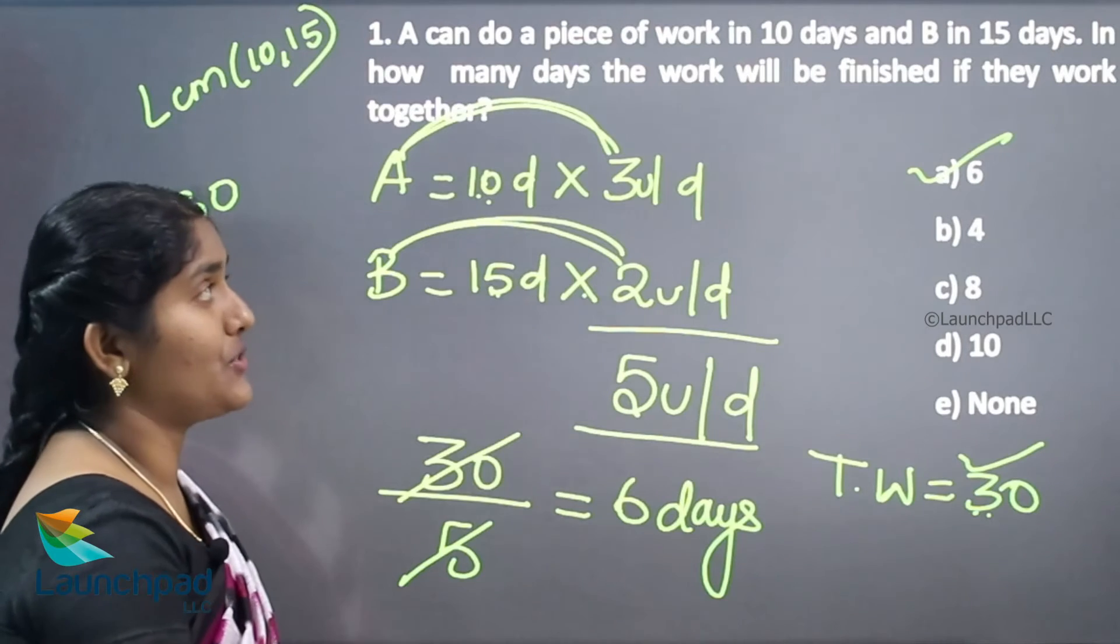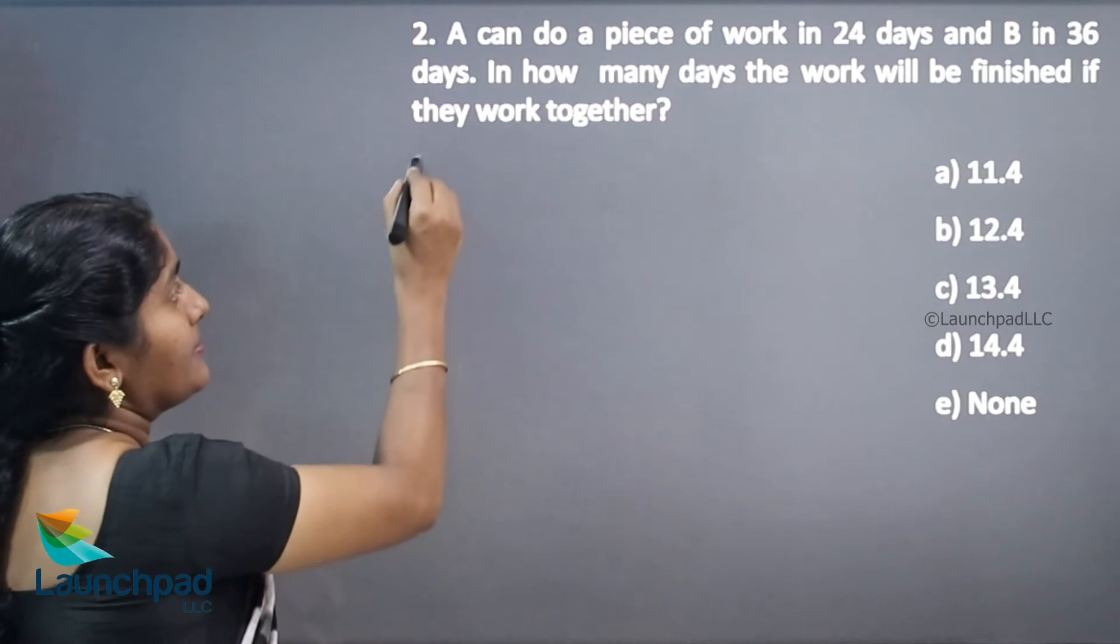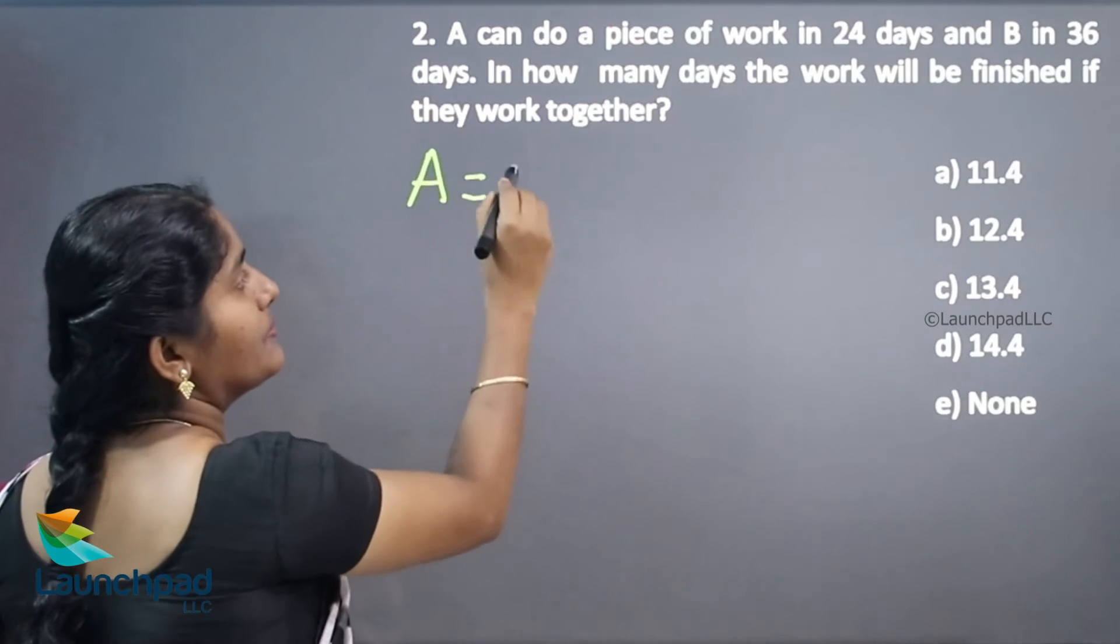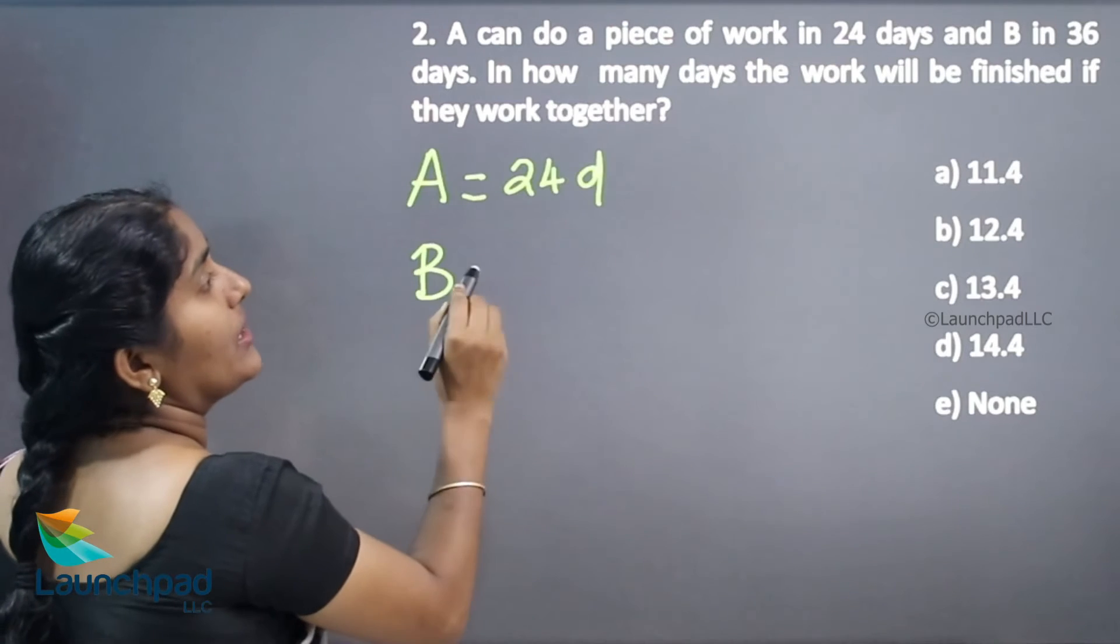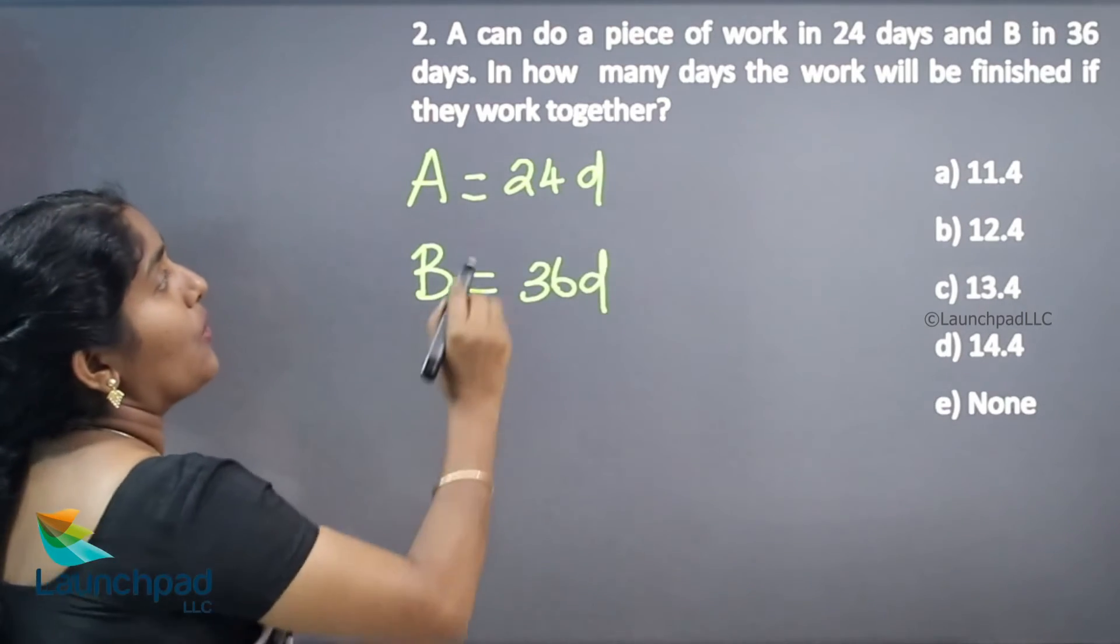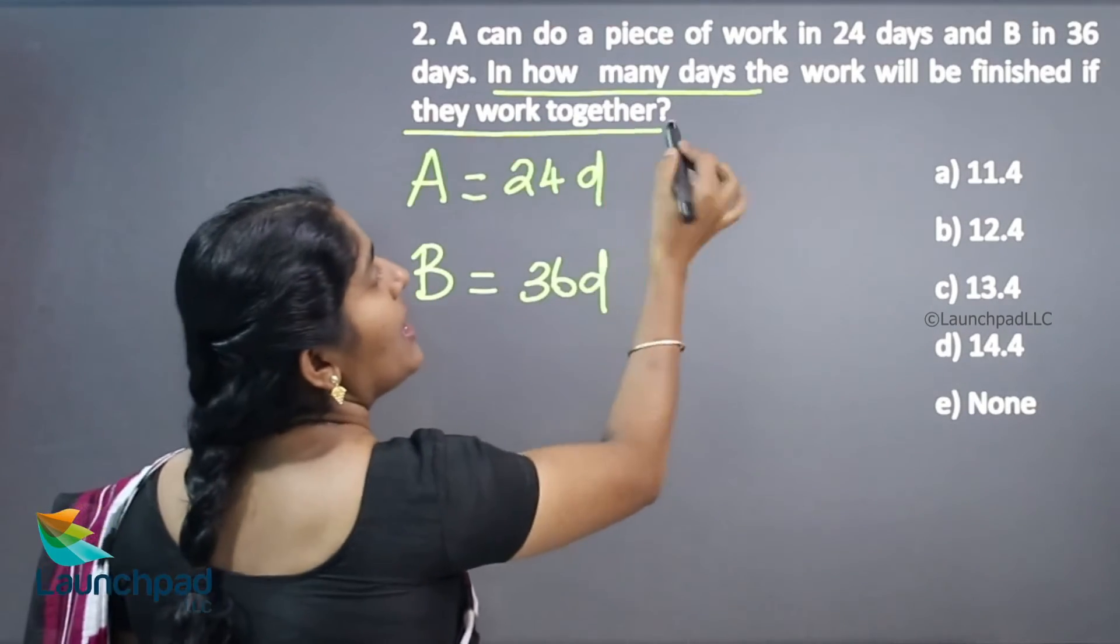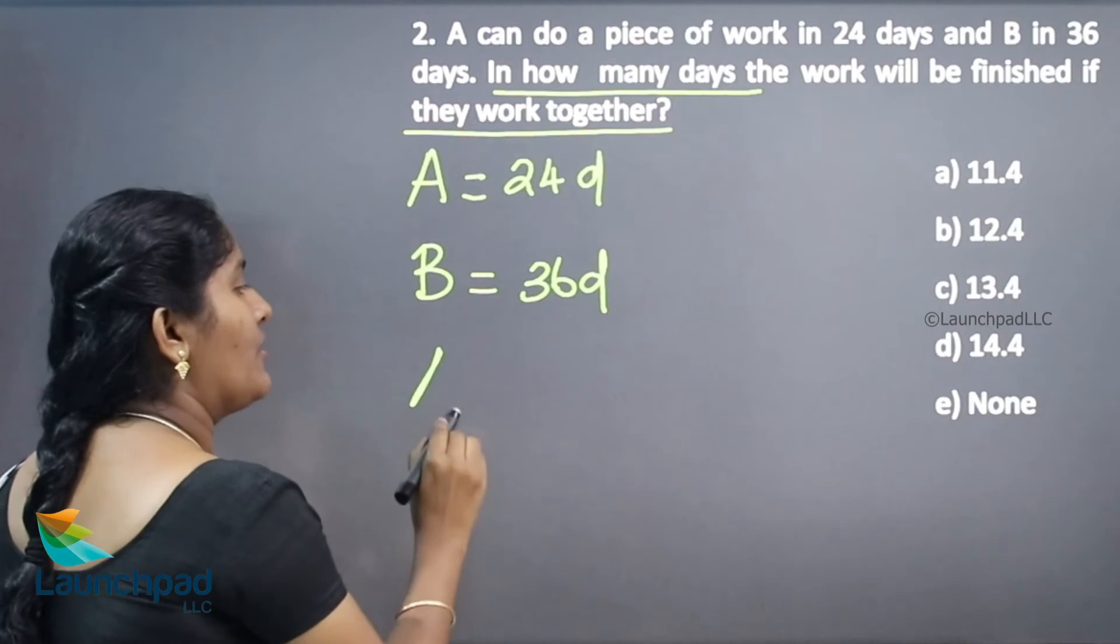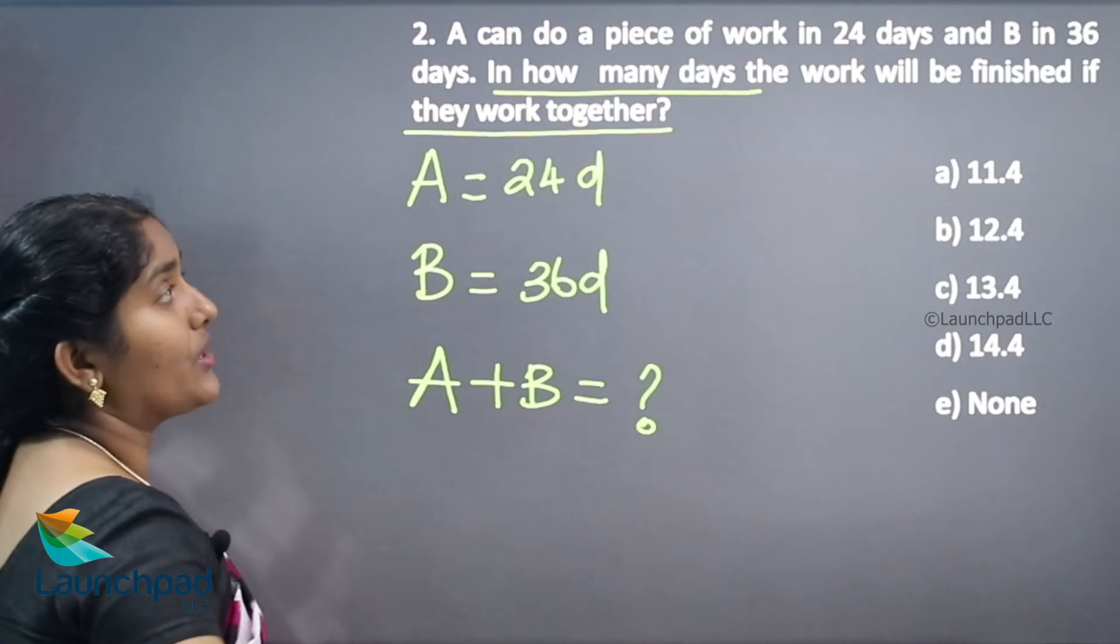Your next question is: A can do a piece of work in 24 days, B can take the work in 36 days. In how many days will the work be finished if they work together? If they work together, joined together, how many days can they take?